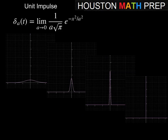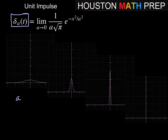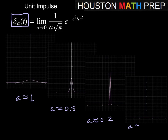When we talk about the concept of unit impulse, we look at this function here — delta sub A of T. It's a limit-defined function where we take the limit as A approaches 0. I've shown the graph at several values: A = 1, A = 1/2, A = 0.2, and A very close to 0. We'll never have A exactly 0 because we'd be dividing by zero, so we look at the limit as A approaches 0.